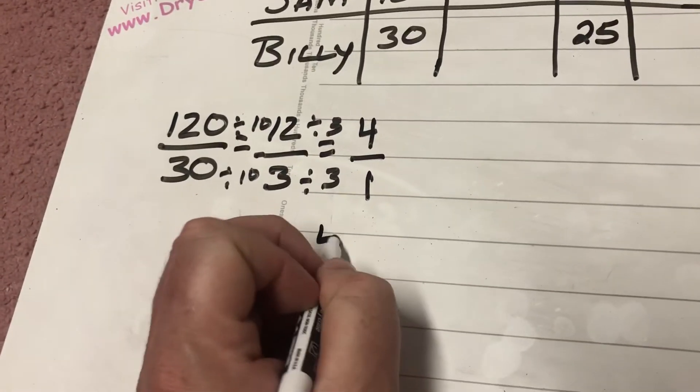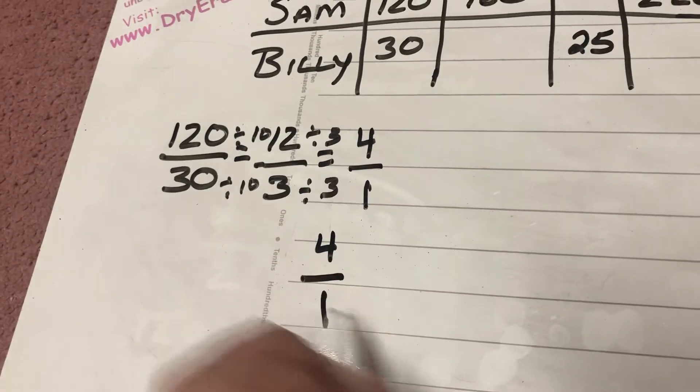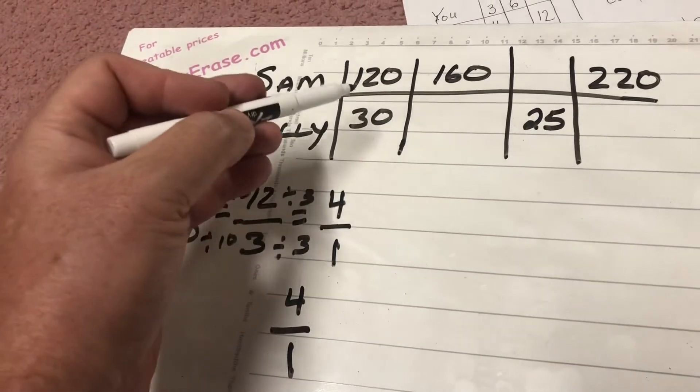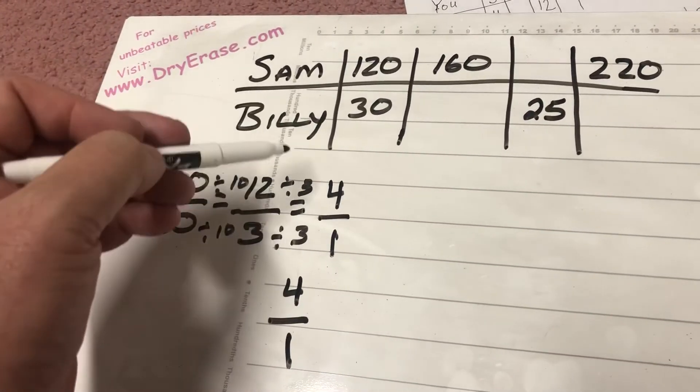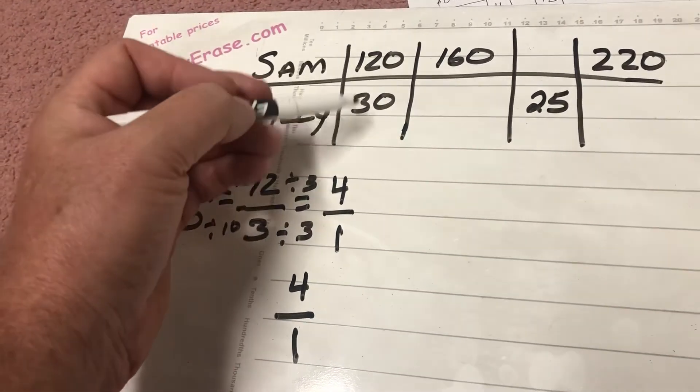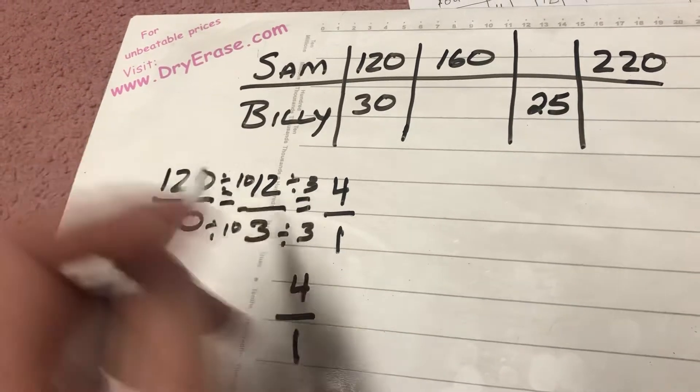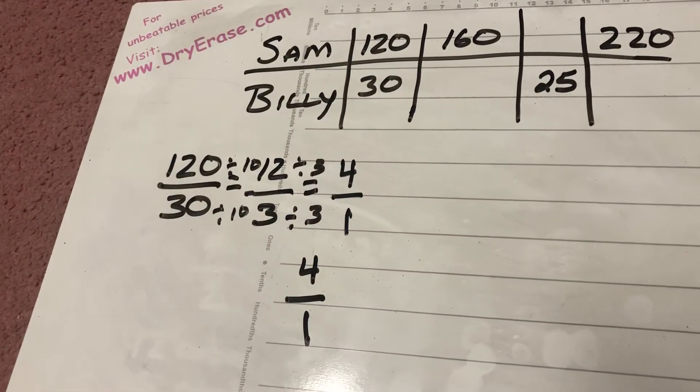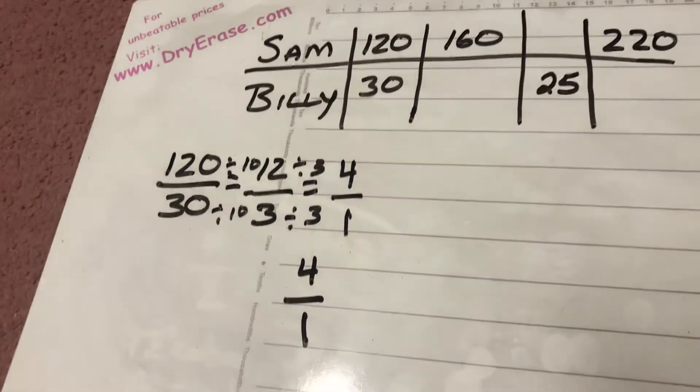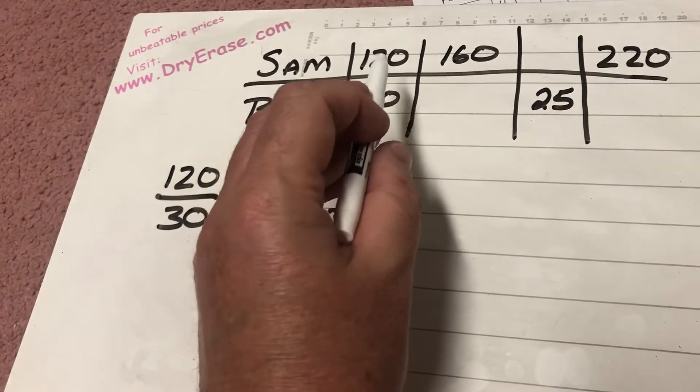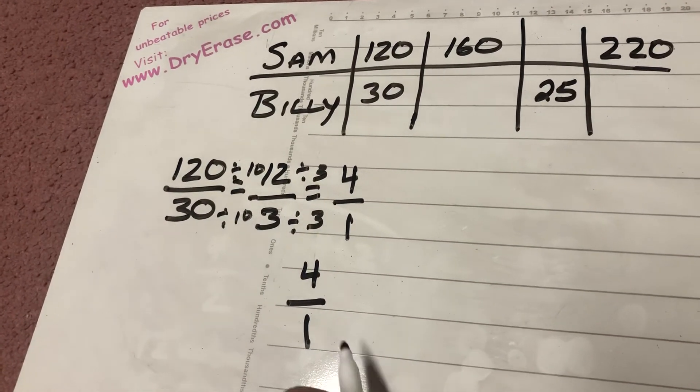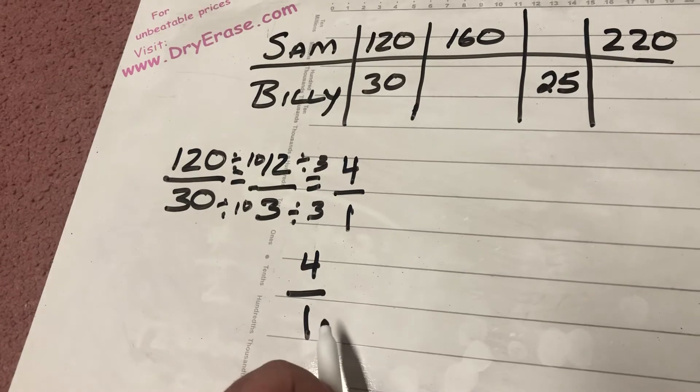So I can use these smaller numbers. In math, it's always good to use smaller numbers. And I can take that 4 over 1 where I took my 120 over 30 and I simplified it to 4 over 1, I put it in simplest form. Now I'm going to use those smaller numbers to help me figure out these missing numbers here. And since 4 represents Sam, 1 represents Billy. For every 4 that Sam has, Billy has 1.